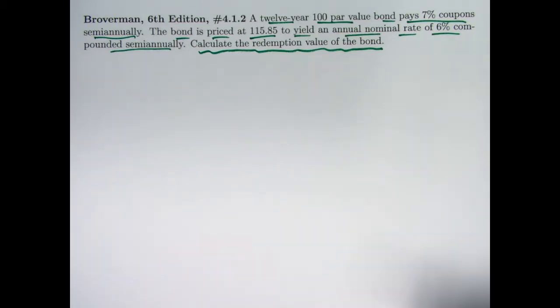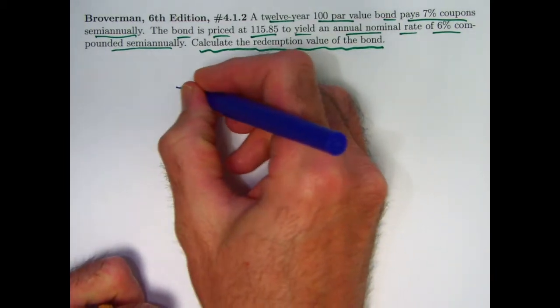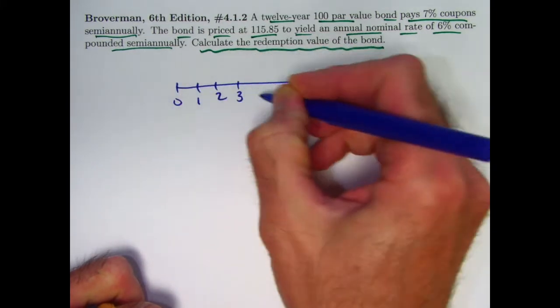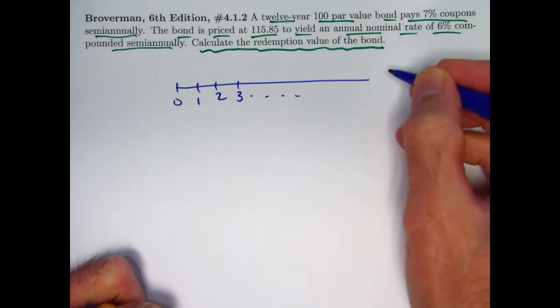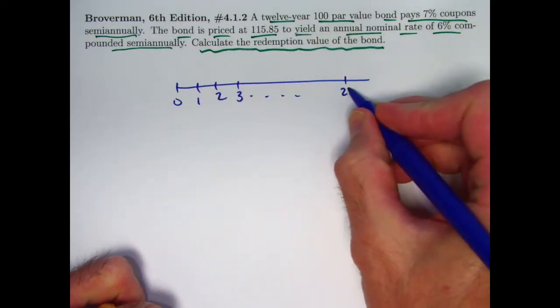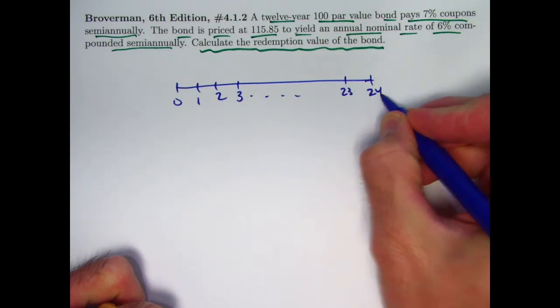All right, so as far as solving this, let's draw a number line. So these are going to be half years. It's a 12-year bond, compounded semi-annually, so the last payment is going to be at time 24.